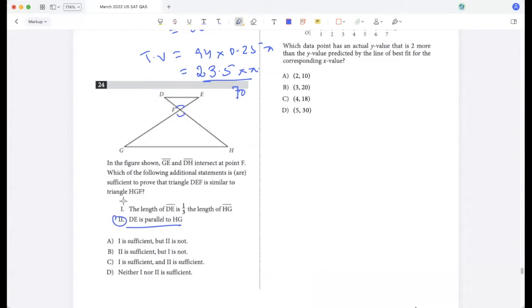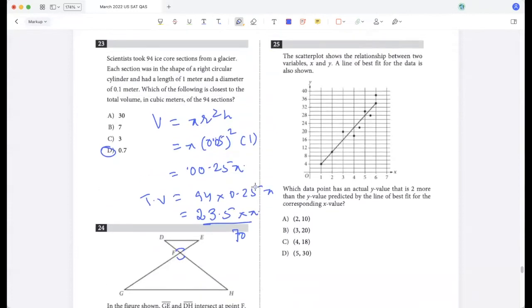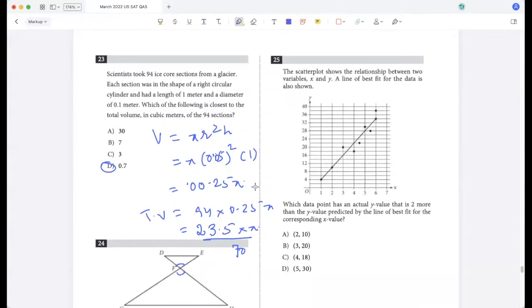The scatter plot shows a relationship between two variables x and y. A line of best fit is also shown. Which data value has an actual y value that is two more than the y value predicted by the line of best fit for the corresponding x value? Two units more, right? So that would have to be this one, because the line of best fit predicts a value of 28 but the actual value is 30, right? So it would be 5 comma 30.